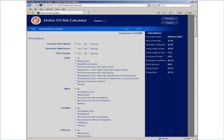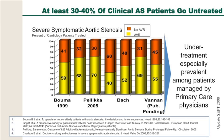We plugged this risk into the STS online risk calculator, and it came back at about 12.3%. Before we go into the patient, just a brief overview of patients with AS: about 30 to 40% of patients with severe AS go untreated, usually managed by primary care physicians who don't refer them to cardiology or surgery because they are too frail, too old, too sick, or asymptomatic. But patients who are not treated have poor outcomes.